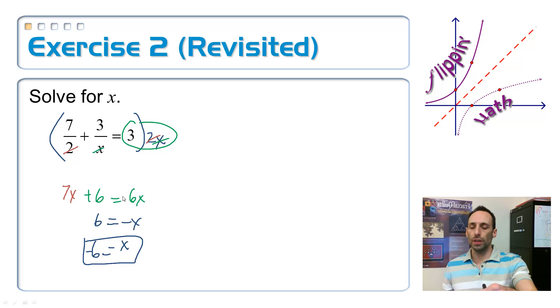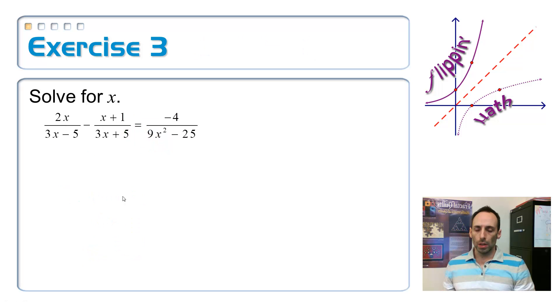So another way to solve these is just to multiply by the least common denominator on both sides of the equation. So take a look at that one. Let's see. Let's do this one together. So let's try this by just multiplying by the least common denominator, which means I have to factor this bottom right here.